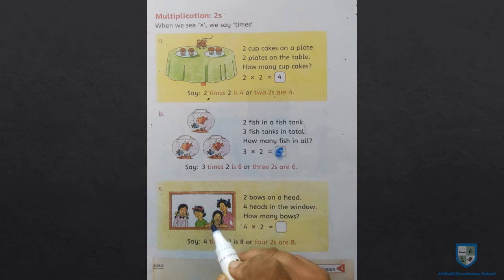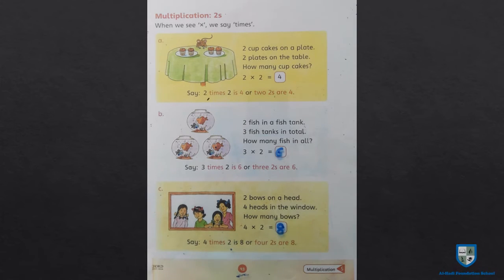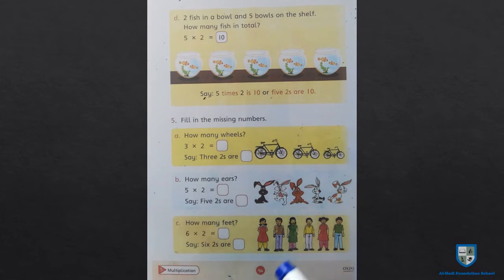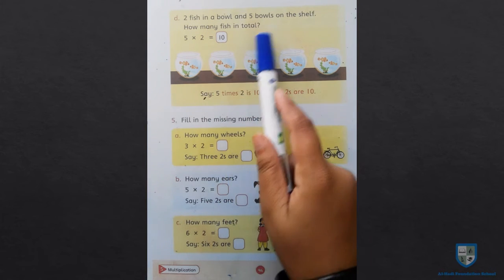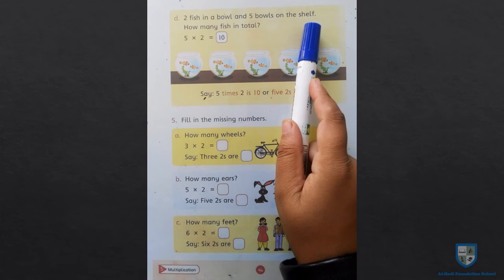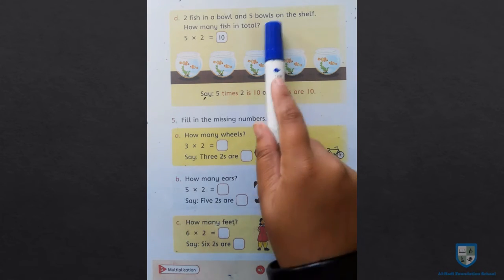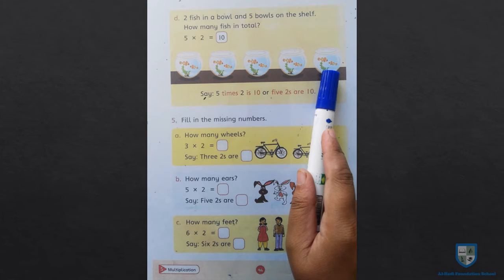1, 2, 3, 4, 5, 6, 7, 8. 4 times 2 is 8, and 4 twos are 8.